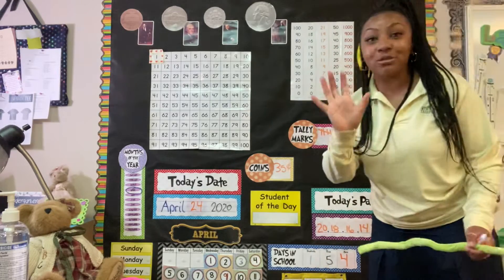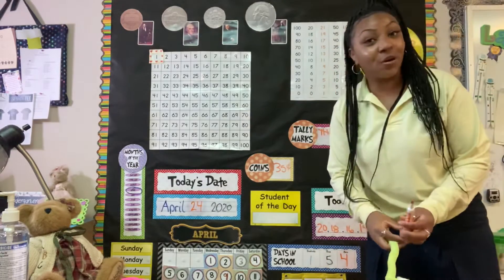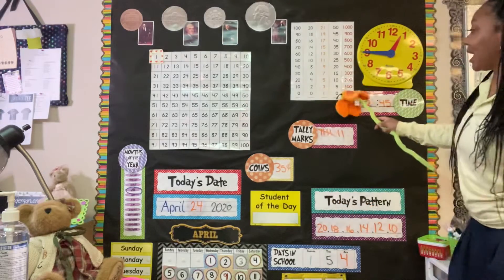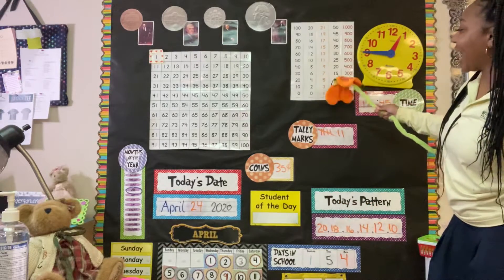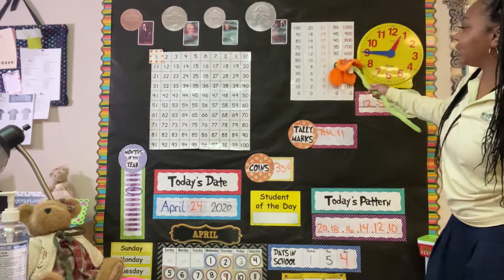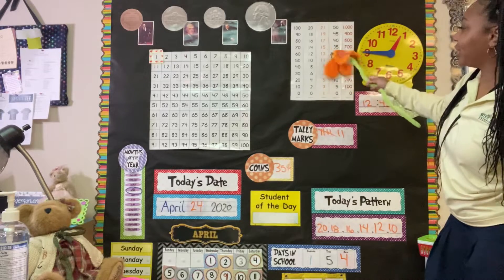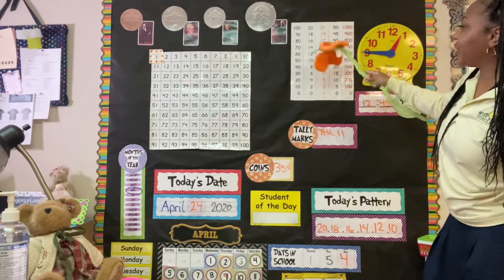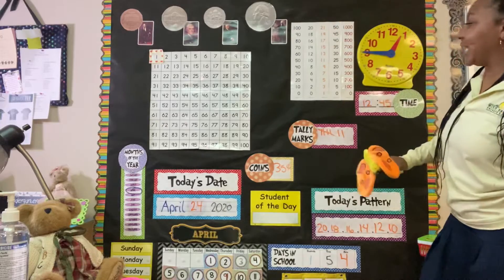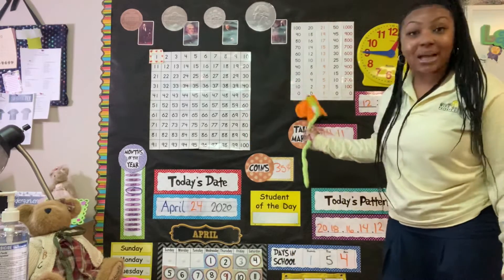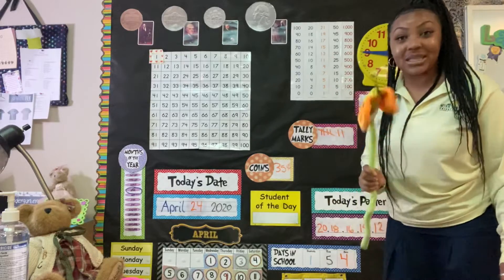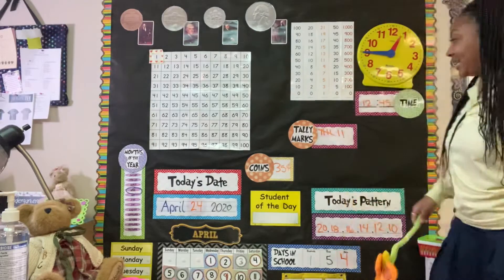Let's count by fives, which are also nickels — they equal nickels. So let's count by 5: 0, 5, 10, 15, 20, 25, 30, 35, 40, 45, and 50. I forgot to mention that when we're counting by tens, that is also counting on dimes, since they equal 10 cents each.